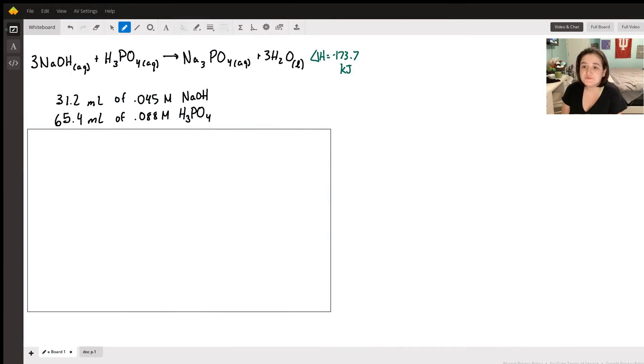Okay Ryan, I wanted to review the question you asked. The formula is three sodium hydroxide in aqueous solution plus one mole of phosphoric acid in aqueous solution yields Na3PO4 in aqueous solution and three moles of liquid water, and the enthalpy for this, delta H, is negative 173.7 kilojoules.